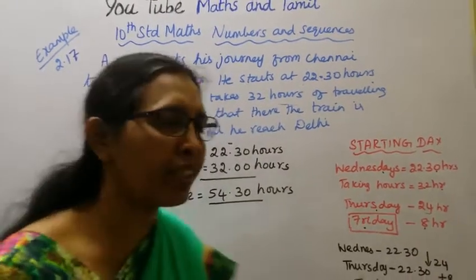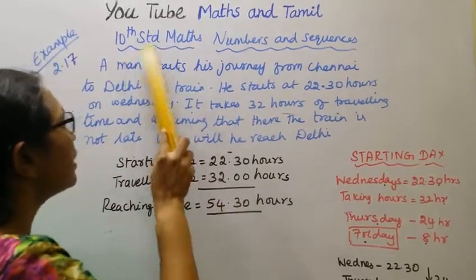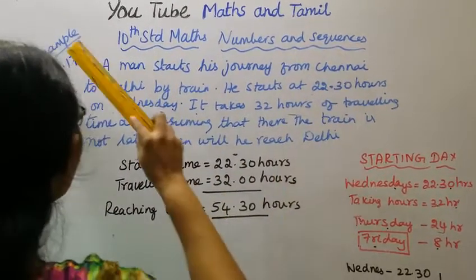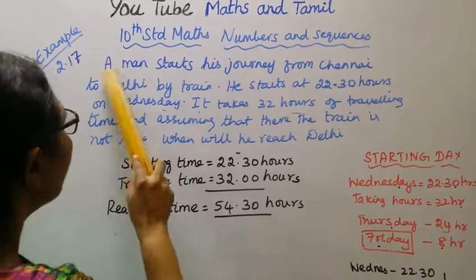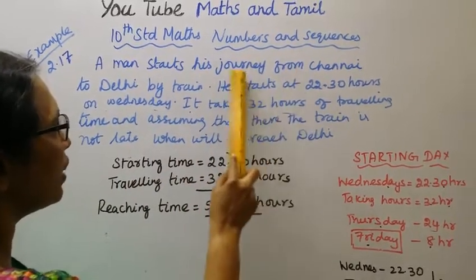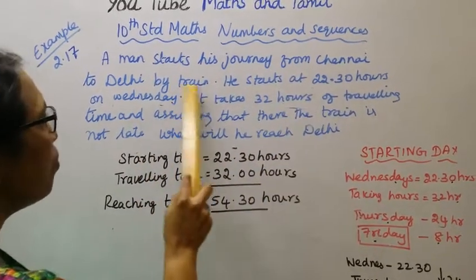Hello students, welcome to Maths and Tamil channel. 10th Standard Maths, Numbers and Sequences, Example 2.17. A man starts his journey from Chennai to Delhi by train.